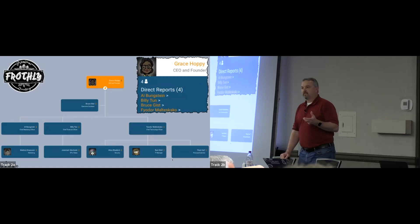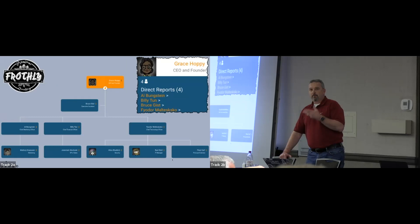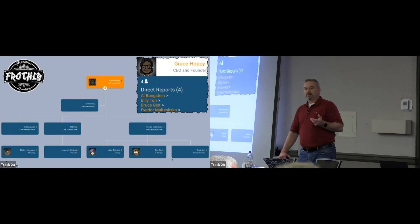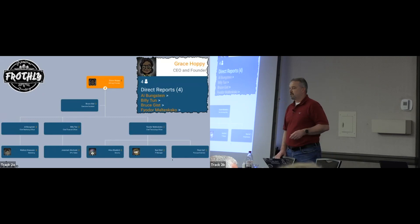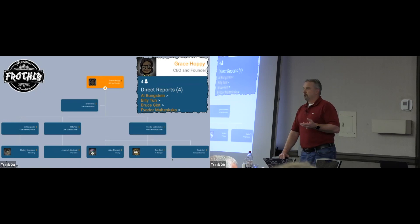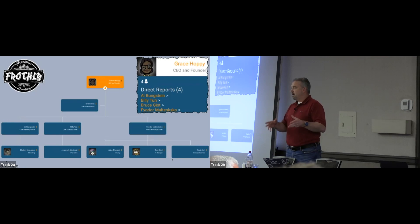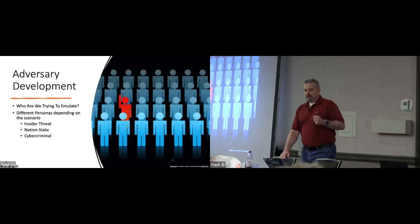We also built this in such a way that we can scale it over time and change the landscape around it. When we started it was just a brewing supply company. When we wanted to emulate a Kubernetes attack, we hired developers for Frothly. When we wanted to emulate an ICS scenario, they bought an organization called Thirsty Burner — a brewery with an ICS system. These are the kinds of things we did to emulate the victim part, and then obviously the other part is emulating the adversary.